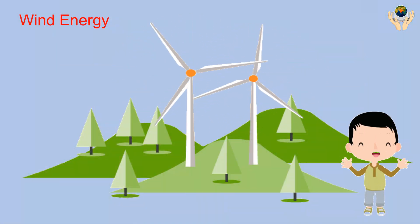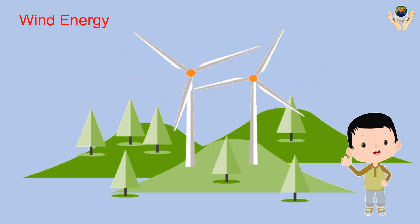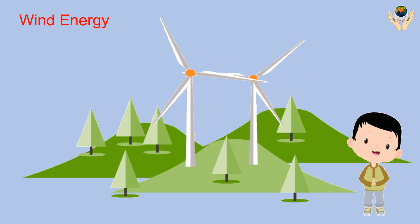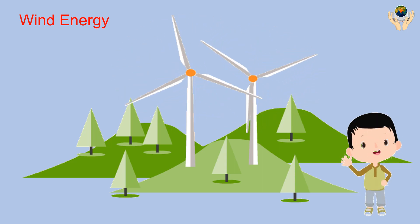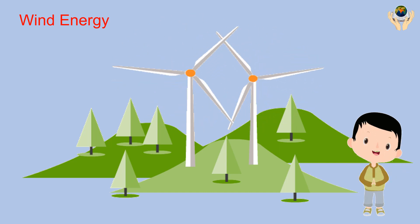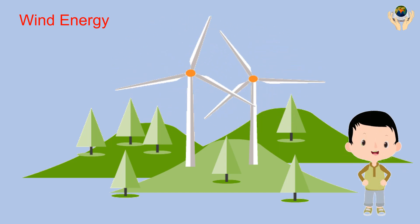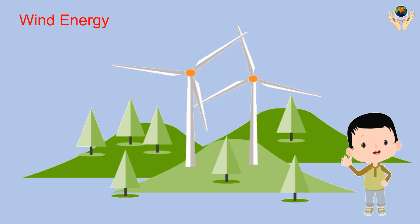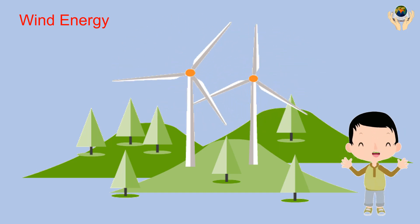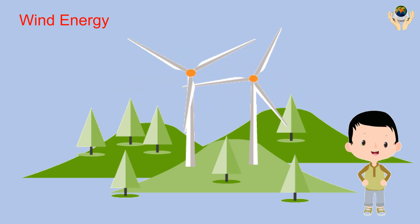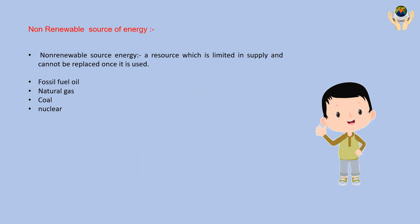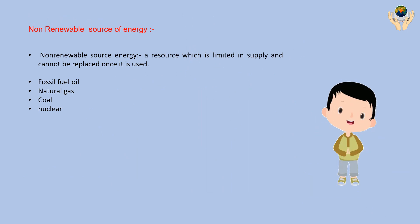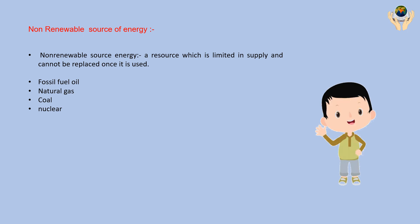The electricity that is generated directly from the wind is called wind energy. To generate wind energy, we install wind turbines in mountains or high-wind areas. The wind runs the fans of the turbine, the turbine runs the generator, and the generator produces the electricity.